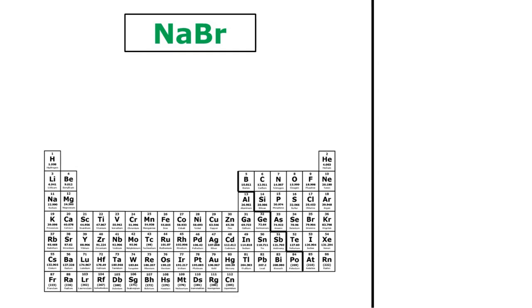Here I have NaBr. Na is my metal, it's sodium, so I'll just write the name of my metal without changing it. And Br is bromine, so I'll change the name of my non-metal so that it ends with '-ide.' So bromine becomes bromide. And that's it. Sodium bromide is the name of this ionic compound.